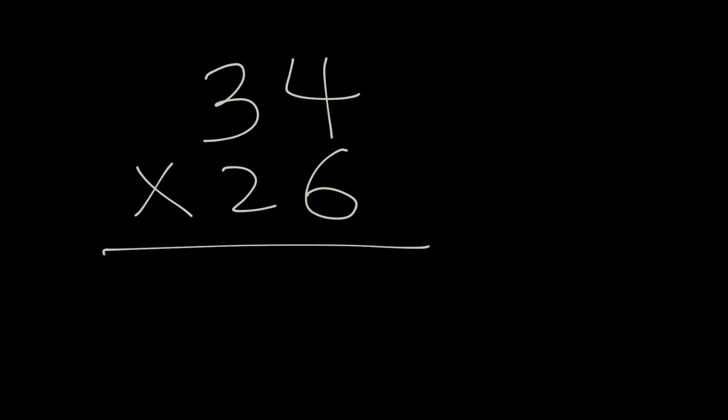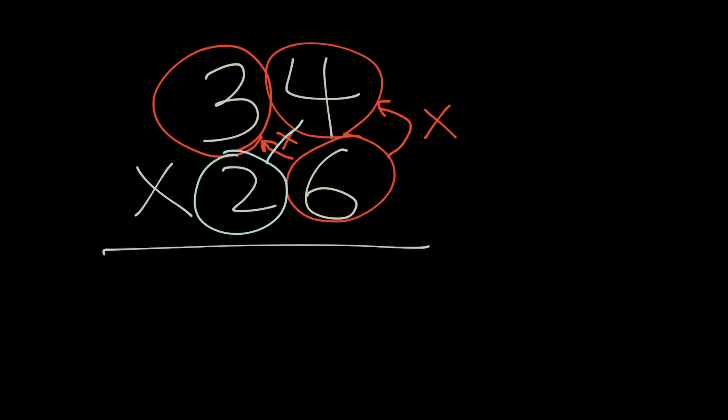The first thing that we would do is times this number with this number. Then we would take the six again, times by three. After that, we would take this number, times by this number.